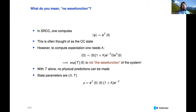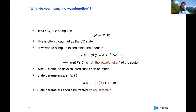So instead, the state parameters are Lambda and T. We can assemble a density operator like this, which we can see is a rank-one density operator — the ket here and the bra here. Most would agree that state parameters should be treated on equal footing when you want to approximate them. This is sort of to whet your appetite for the bivariational principle.